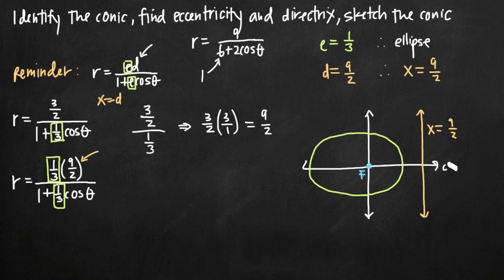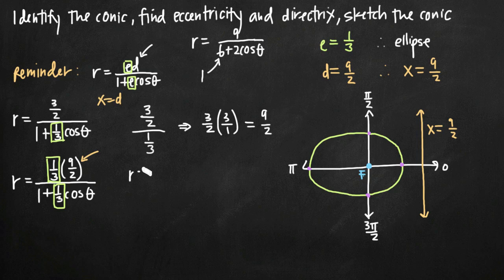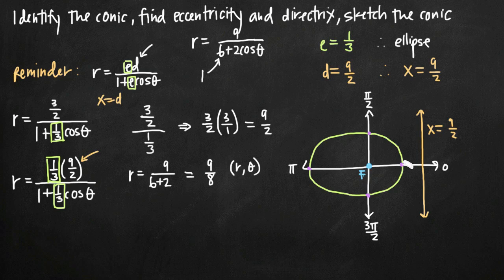We plug in each angle for theta into our original equation r equals 9 over (6 plus 2 cosine theta). At theta equals 0: cos(0) equals 1, so r equals 9/(6+2) equals 9/8. The polar coordinate point is (9/8, 0). At theta equals π/2: cos(π/2) equals 0, so the denominator is just 6, giving r equals 9/6 equals 3/2. The point is (3/2, π/2).